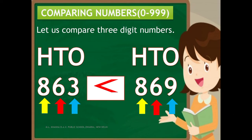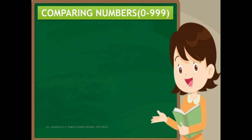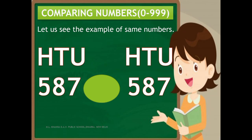Now, children, let us see the example of same numbers. Let us compare 587 and 587. Each digit in the corresponding place values is equal, so both are equal. That means 587 is equal to 587.